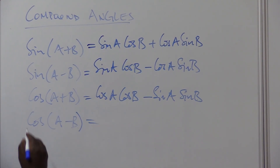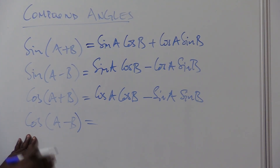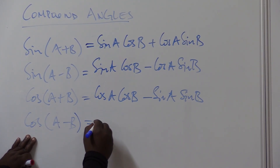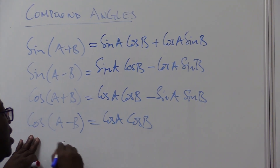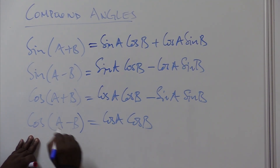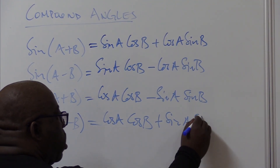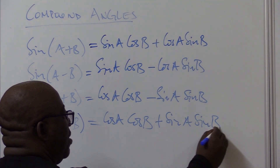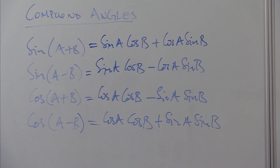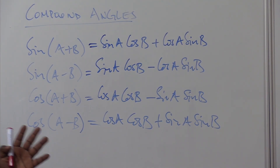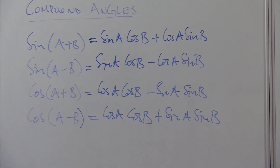The next one is the same thing. It's cos, so the rhythm will be cos cos, sine sine. Let's write it down. So it's cos A, cos B — change sign — plus sine A, sine B. This is how you go about doing the compound angles. Remember, you're given this in a formula sheet. We'll do examples to show where this helps us.